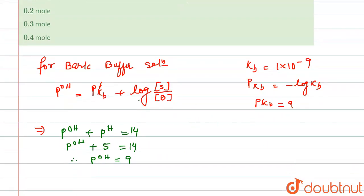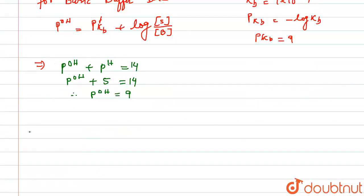Moving further, we are putting all these values in the equation. It is 9 equals 9 plus log of salt upon base. So log of salt upon base concentration equals zero because these two nines got cancelled out.